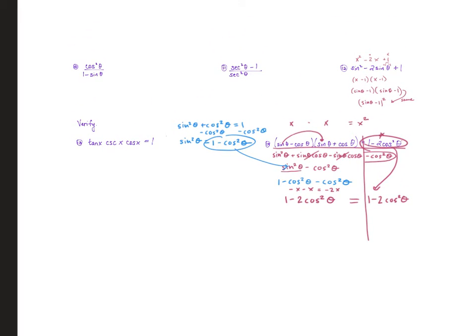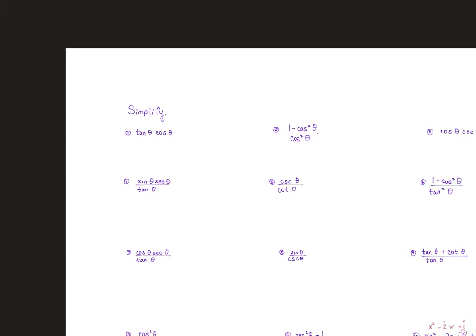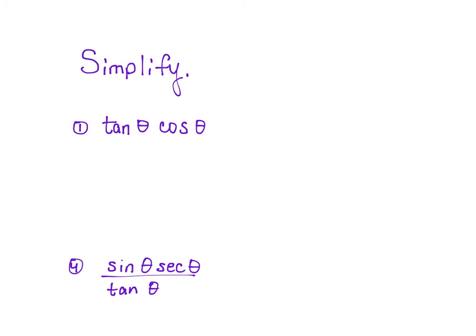Let's look at number 1. All we need are our identities. Simplify as much as you can. Tangent is sine over cosine, times cosine. Since we're multiplying, the cosines cancel, and we're left with sine θ.